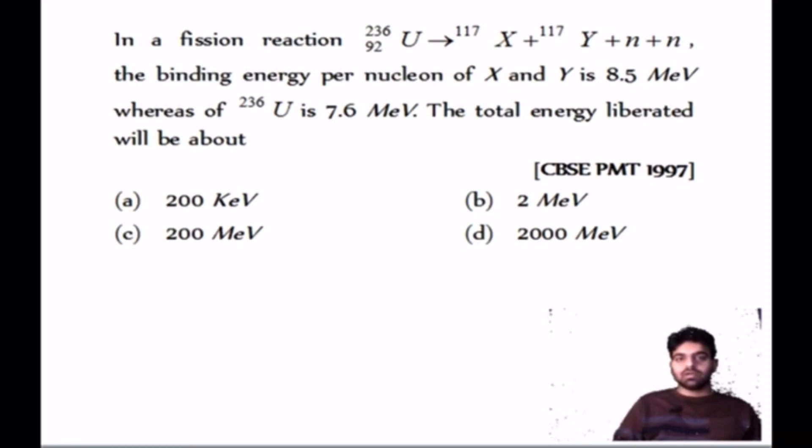See, uranium-92 with mass 236. It gave one nucleus X with mass number 117, and Y with mass number 117, plus neutrons. Uranium gave X plus Y plus neutrons. X is 117, neutron, gives 236.